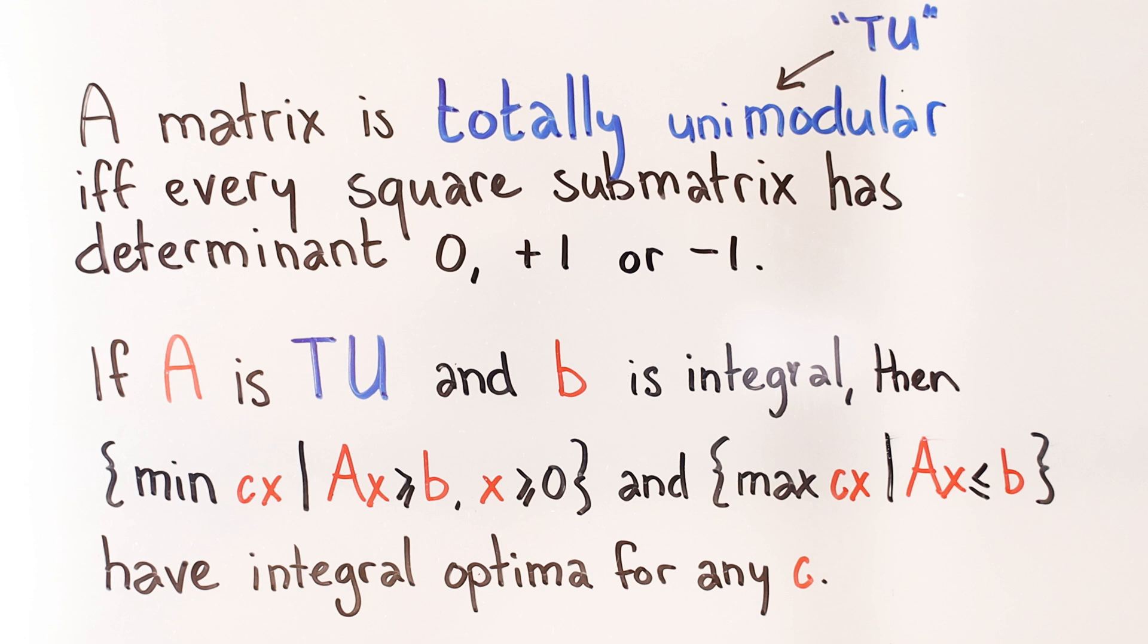Don't get me wrong, total unimodularity is a pretty restrictive condition. To be perfectly honest, whenever I've checked my ILP coefficients, they never were, but still, if you're doing a simple integer program, maybe check to see if it's totally unimodular. You might have more luck and get a polynomial time algorithm for free.